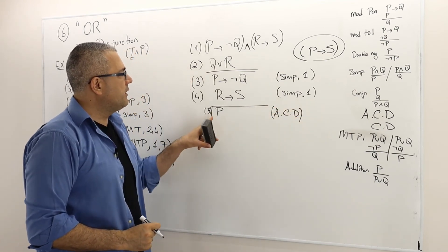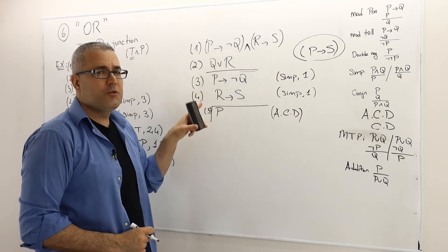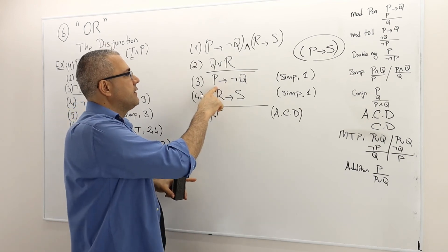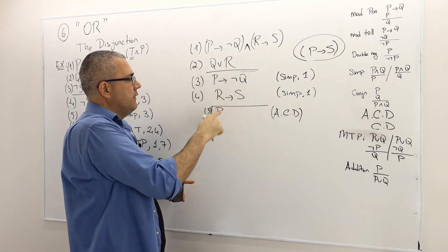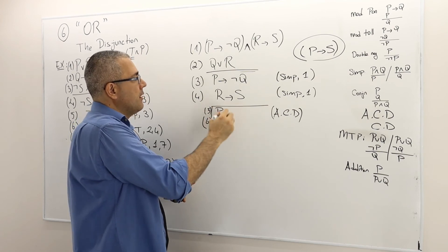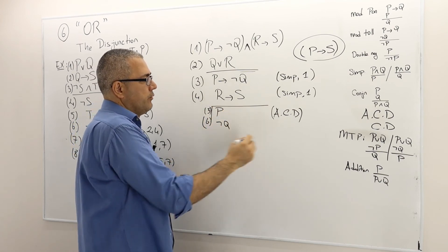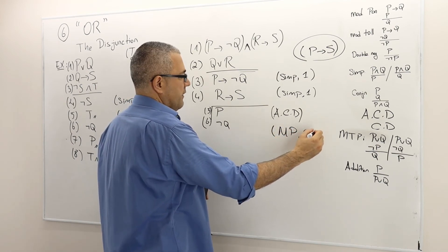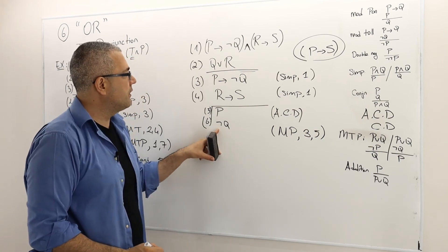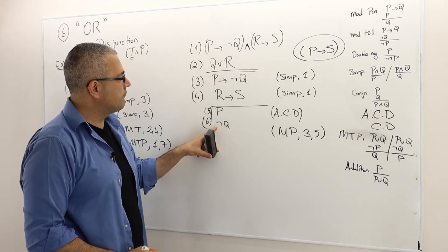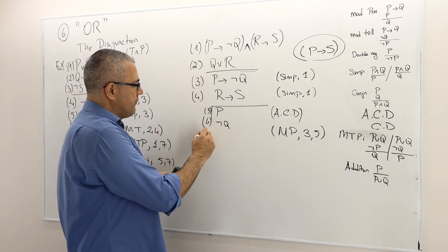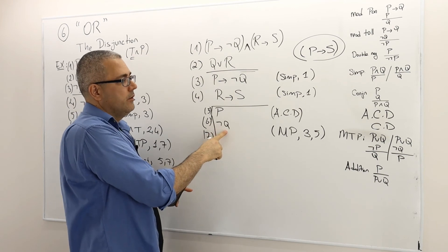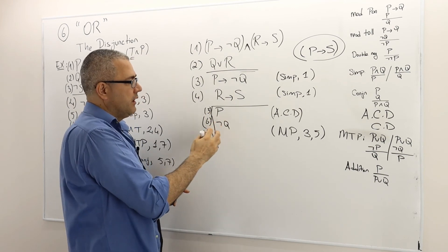When P is true, what do I know? I can use my previous four premises. Look at line three, P implies not Q and P. Therefore not Q must be true. This is modus ponens of line three and five. Very good. Not Q is true. What else? Use line two. Q or R, not Q. So this is exactly MTP. So I have R between the arguments two and six.